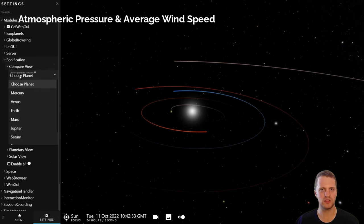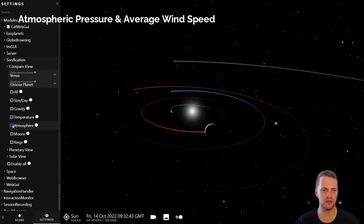And finally we have Venus, which instead has a thicker atmosphere and higher wind speeds compared to Earth.